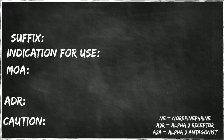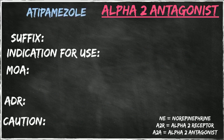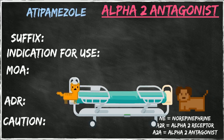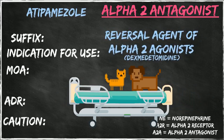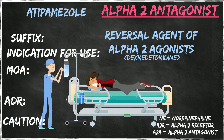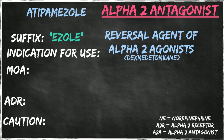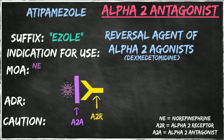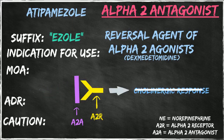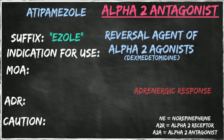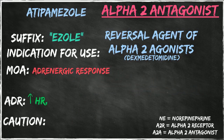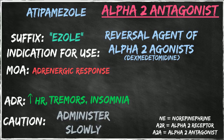Next up are the alpha-2 antagonist agents. Atipomazole is a drug in this category used in veterinary medicine as a reversal agent for alpha-2 agonists like dexmedetomidine. Dexmedetomidine is used for its cholinergic or sedative properties and is becoming more widely used in ICU and operative settings. The suffix of this drug is -EZOLE. The drug works by inhibiting norepinephrine from binding with alpha-2 receptors, which causes an adrenergic response instead of a cholinergic response. Adrenergic side effects that result are faster heart rate, central nervous system stimulation leading to tremors and insomnia. If this drug is given too quickly when used as a reversal agent for dexmedetomidine, cardiac collapse can occur.